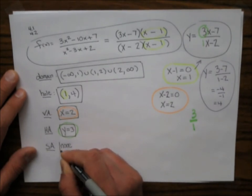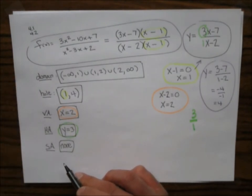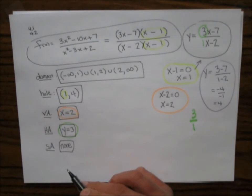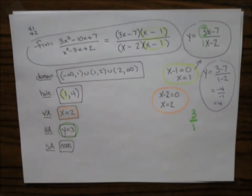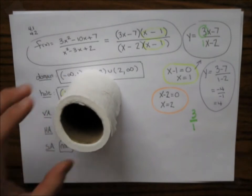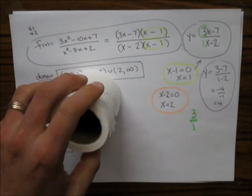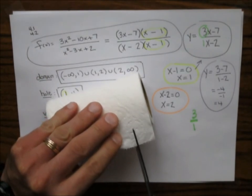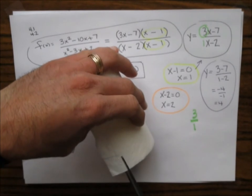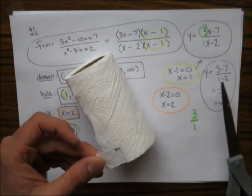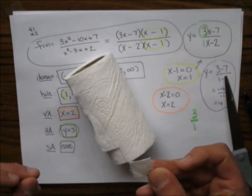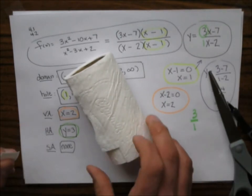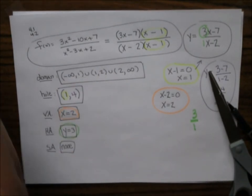The slant asymptotes: none. In this class on the test we're not going to have you find slant asymptotes, given the unusual semester we're having with shelter-in-place and Cuesta closing its face-to-face classes.